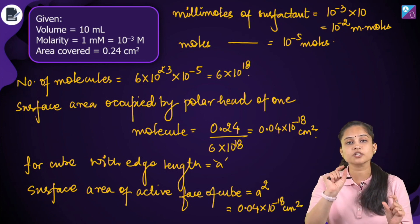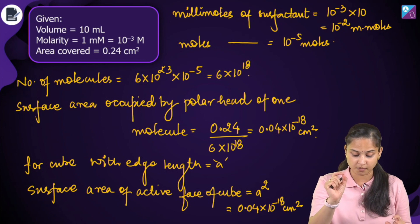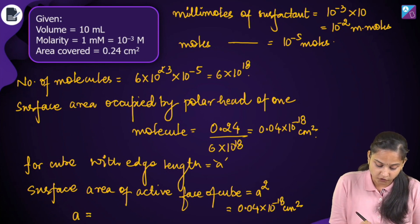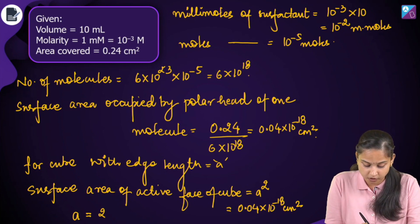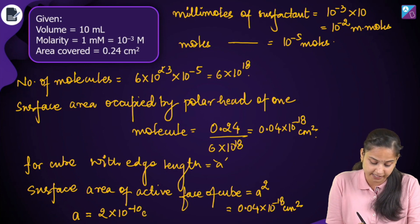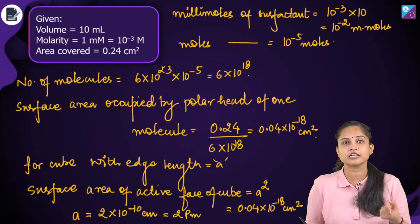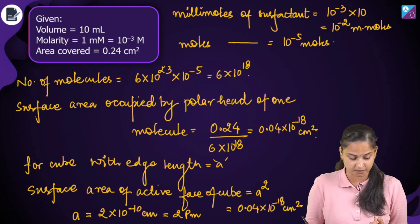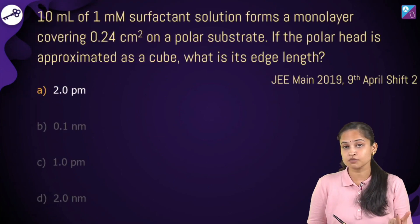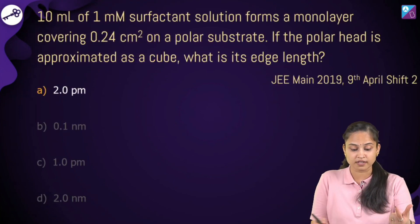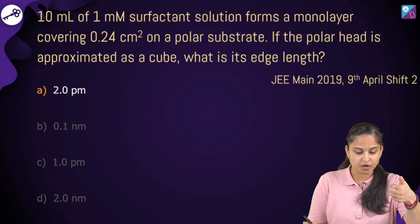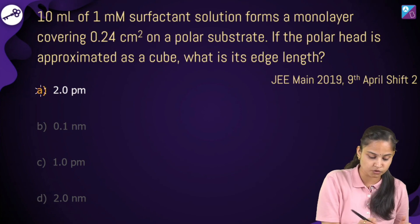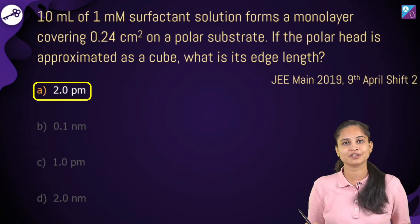A² = 0.04 × 10⁻¹⁸, so A = 2 × 10⁻¹⁰ cm, which means it equals 2 picometers, because 1 picometer = 10⁻¹⁰ cm. So the answer to the question — what is the edge length of the polar head if we consider it to be a cube — comes out to be 2 picometers. That is the correct answer for this question.